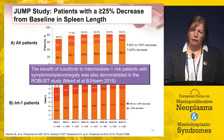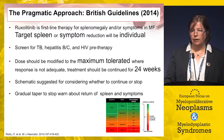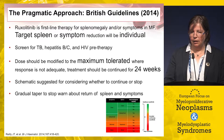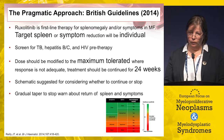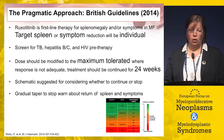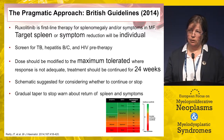Some studies with later JAK inhibitors have also included intermediate-1 risk patients and suggest benefit. From the British guidelines, our practical approach: in the UK we regard ruxolitinib as first-line therapy for splenomegaly and/or symptoms — you don't have to have both. We individualize the target for each patient, screen for infections before therapy, adjust the dose to the maximum tolerated, and treat for 24 weeks to assess benefit. We use a traffic-light schematic considering spleen response, symptom response, and toxicity including infections.